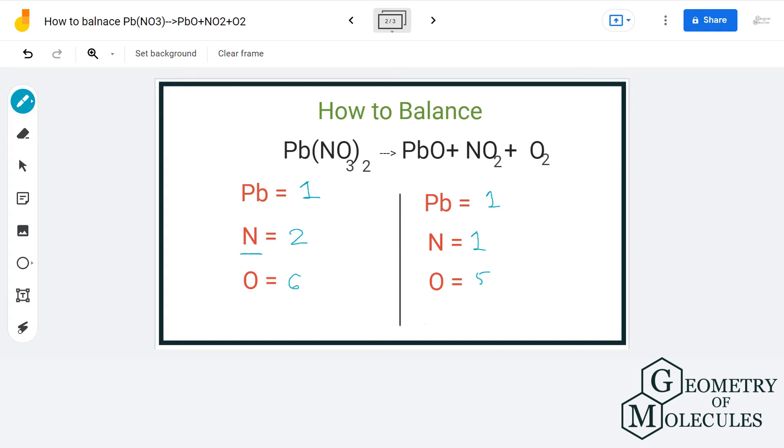We have two nitrogen atoms on the reactant side and only one on the product side. So, let us multiply it by two. This gives us seven oxygen atoms on the product side.